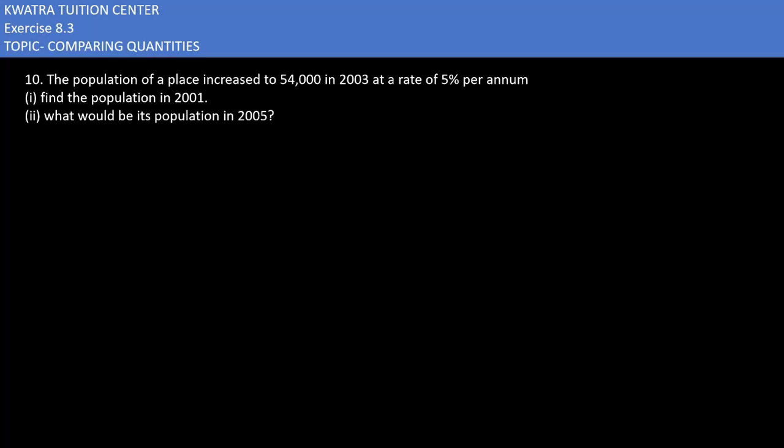Now we'll be moving to the 10th one. The population of a place increased to 54,000 in 2003 at a rate of 5% per annum. Find the population in 2001. Let's say the population in 2001 is not known to us because this is a type of application-based question.